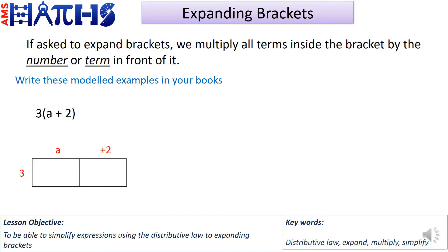Please write the examples in your book. Here's our first example: 3 bracket a plus 2, which means we need to multiply 3 by what's in our bracket. We have two terms in the bracket: a and positive 2. I've drawn two boxes and split the terms above the boxes, with the number 3 to the left. So 3 times a gives us 3a, and 3 times 2 gives us 6. Our answer is 3a plus 6.